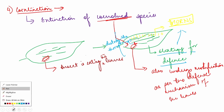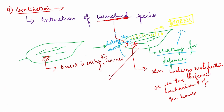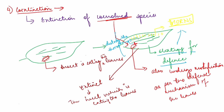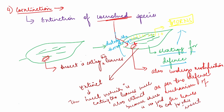Now, if this leaf, by any chance, becomes extinct due to habitat loss or excessive deforestation, then what about this insect? The insect which is feeding only on this leaf, which is completely dependent on this leaf, will also go extinct. Because there is no food for it to eat. This is how, if one species goes extinct, other organisms dependent on that species will also go for extinction — and that is what we call co-extinction.